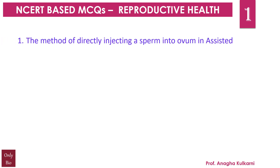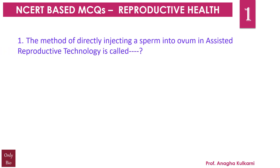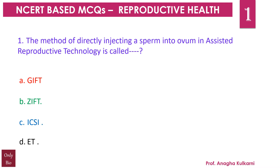Question number 1: The method of directly injecting the sperm into the ovum in assisted reproductive technology is called as — A. GIFT, B. ZIFT, C. ICSI, D. IVF. The correct answer for this question is C.